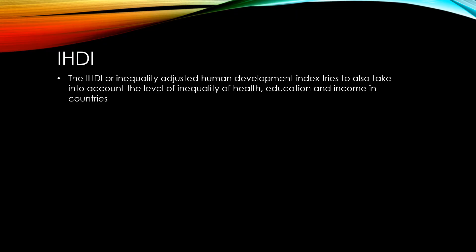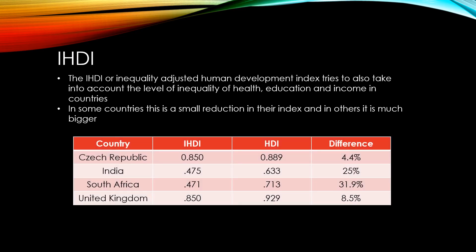The IHDI, or Inequality Adjusted Human Development Index, tries to also take into account the level of inequality of health, education, and income within countries. In some countries this is a small reduction in their normal Human Development Index, and in others it is much bigger. The bigger the difference, the greater the inequality in a country, meaning that no matter what its HDI is, there would be some people doing considerably better in terms of access to these resources and some doing far worse.